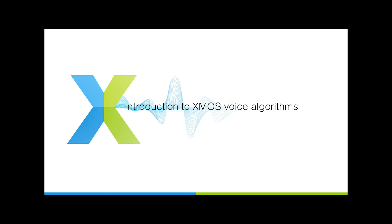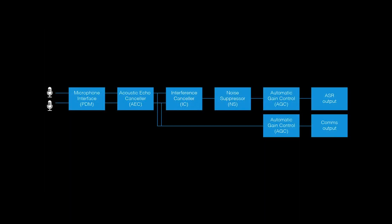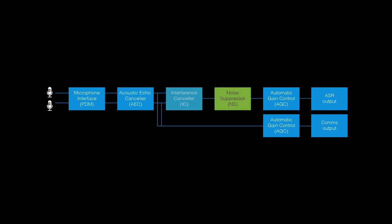This is a quick introduction to XMOS voice algorithms and how they work together to isolate the voice command from the captured signal. There are four main algorithms: an acoustic echo canceller, an interference canceller, a noise suppressor, and automatic gain control.